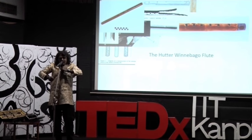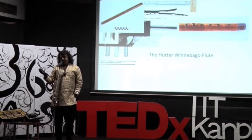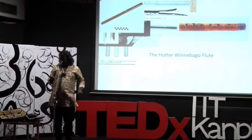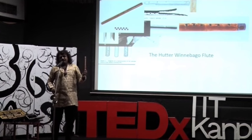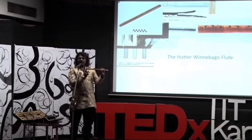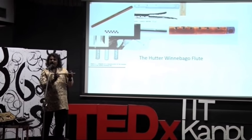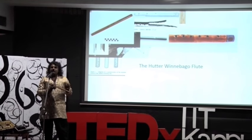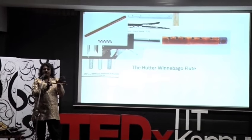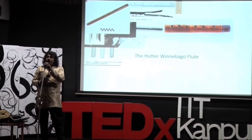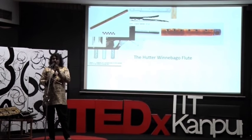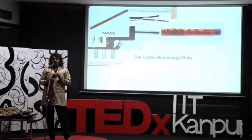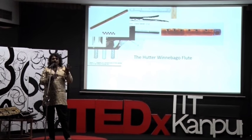Now, after the evolution of all these flutes, by the time the flute came into Lord Krishna's hand, it more or less looked like this — it had one blowing hole, was closed from one end, and had six playing holes. From many pictures and writings we can make out that he played a flute of this size. We definitely don't know what kind of music he played, although we hear stories that whenever he played, the animals and humans were all enchanted and mesmerized. From then onwards, I think the flute in India has become symbolic of spirituality.